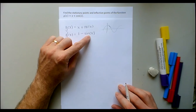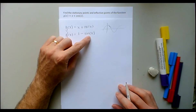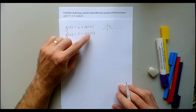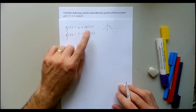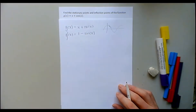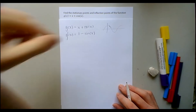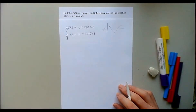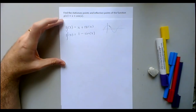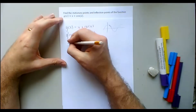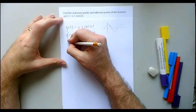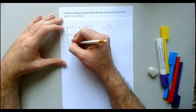So g'(x) = 1 - sin(x). That's really interesting: sin(x) is between 1 and -1, so if you subtract it from 1 it's never going to be negative. It would be zero sometimes, whenever sin(x) equals 1, and I'll come back to that later — but it looks like g'(x) is always non-negative, meaning g is always increasing.